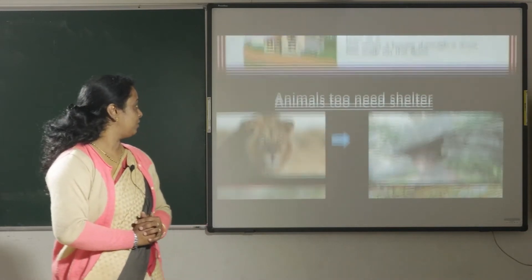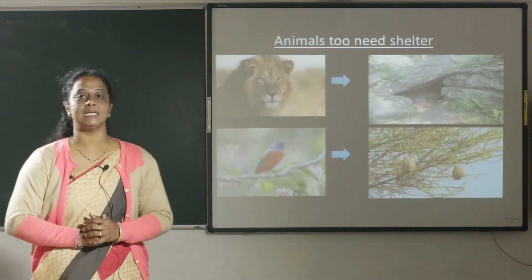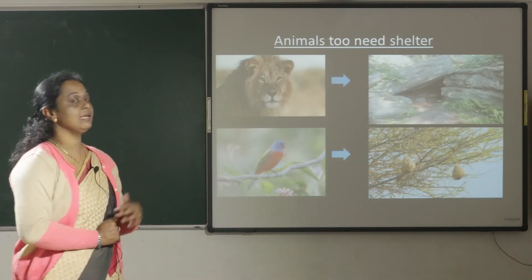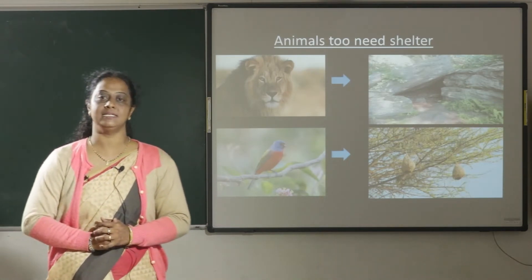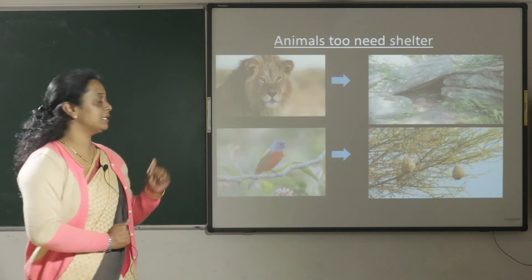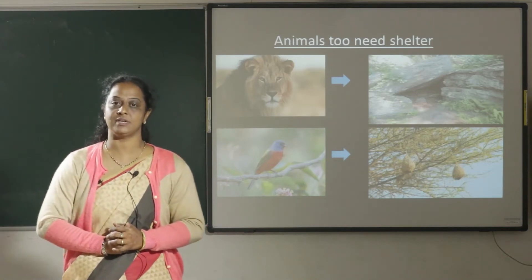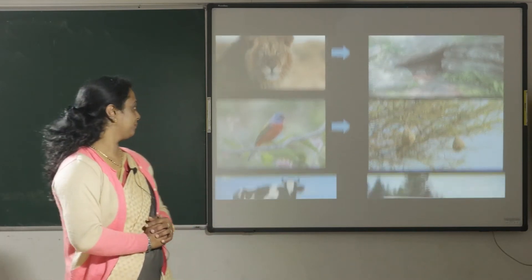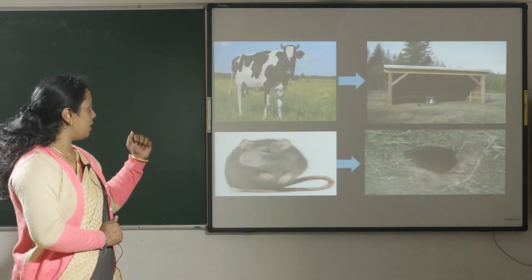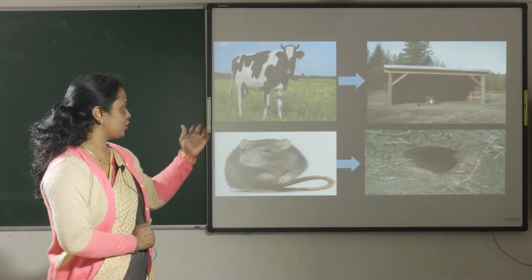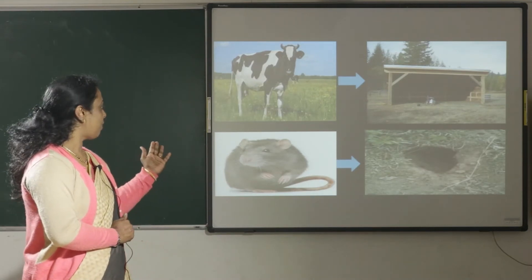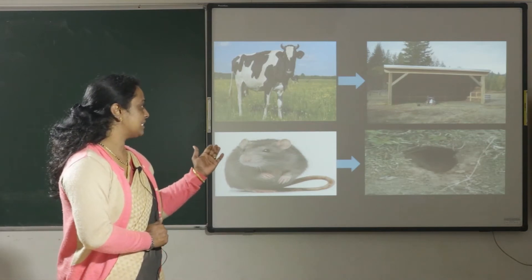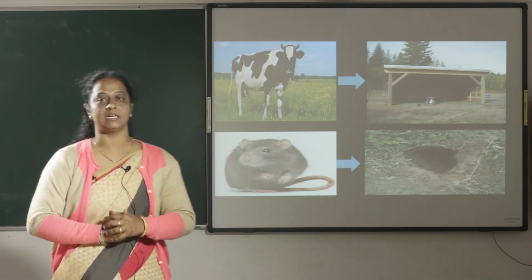Like human beings, animals too need shelter. Where does the lion live? The lion lives in a den. Where do the birds live? Birds live on trees, and some birds build their nest on a tree. Where does the cow live? The cow lives in a shed. And what about a mouse? It makes a hole underground.